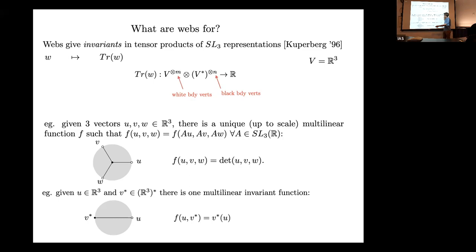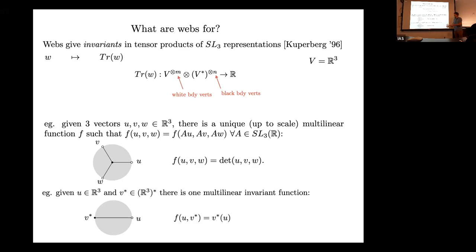Here's another example: a very simple web with just a single edge with one white and one black boundary vertex. It takes a vector and a co-vector, and you get a number by simply applying the co-vector to the vector. How is that sl3-invariant? sl3 acts on the dual R³ in precisely the way so that this pairing is invariant — if you think of v as a row vector then it acts on the right by the transpose inverse.